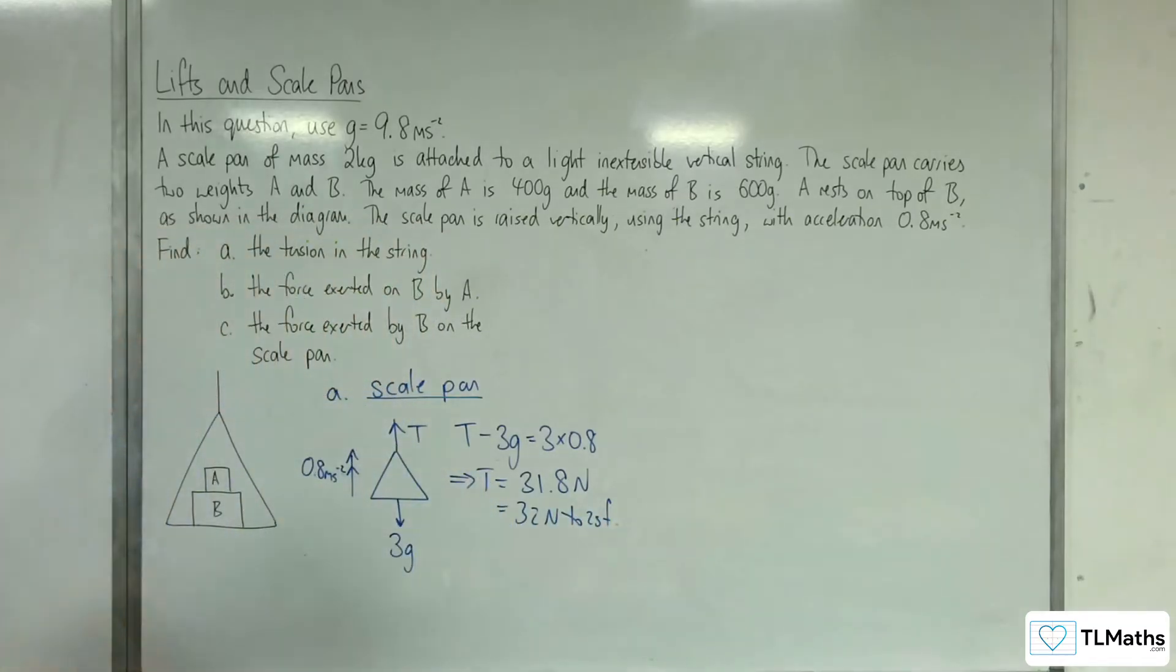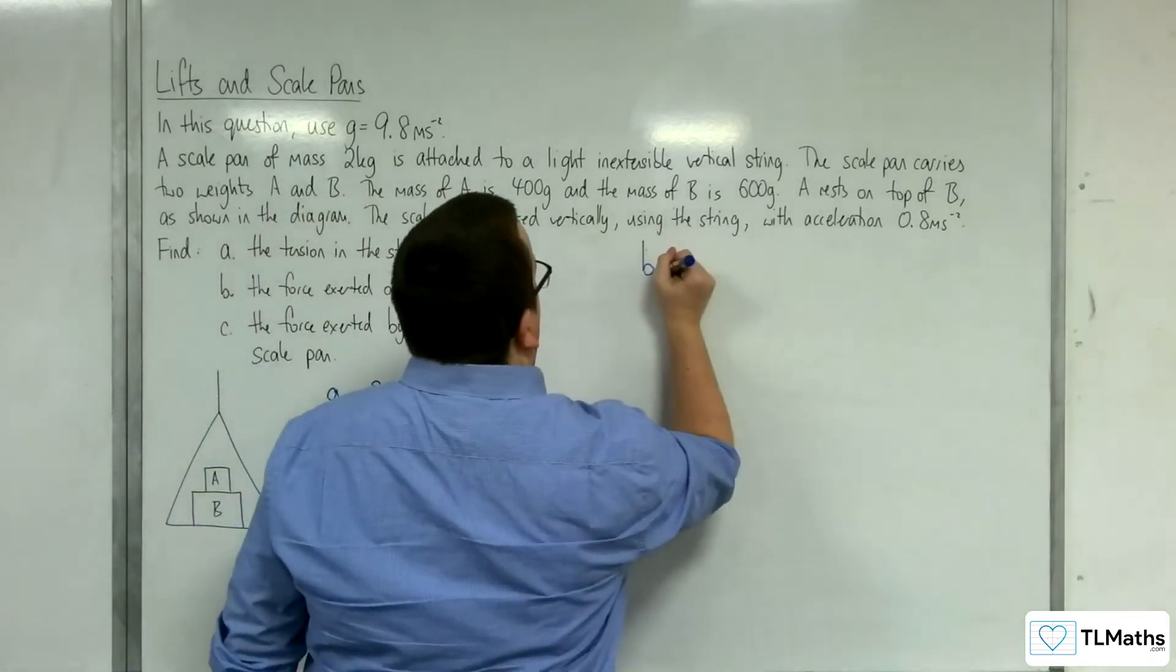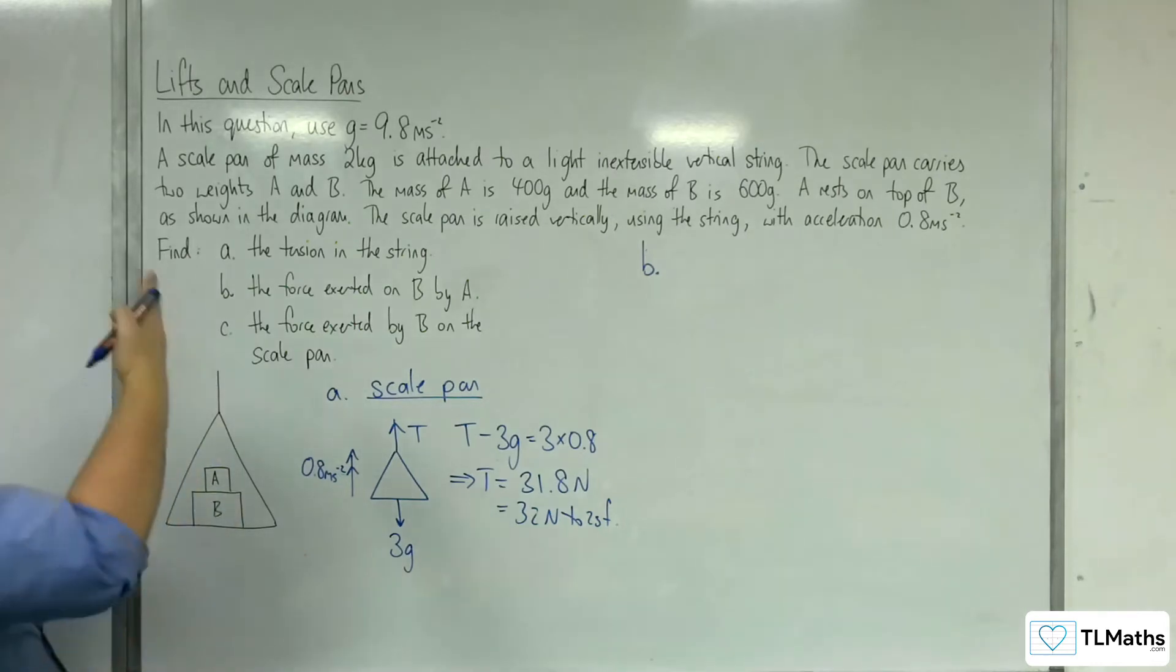Because we're using g is 9.8. So that's part A. Part B, find the force exerted on B by A.